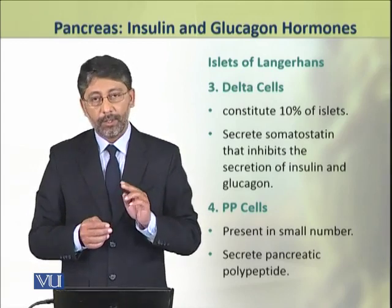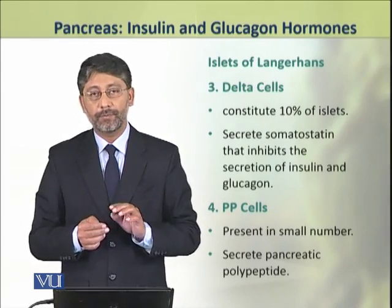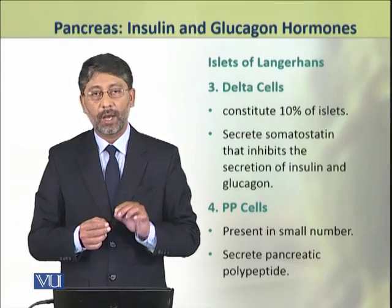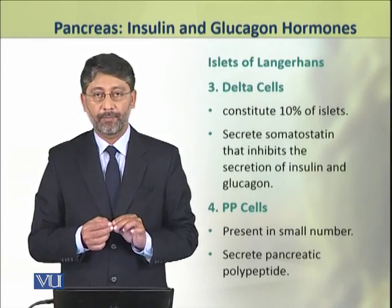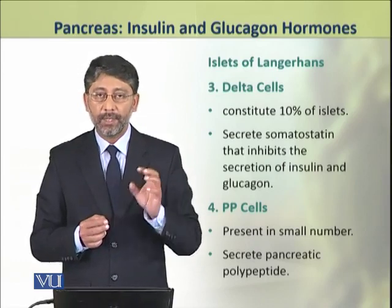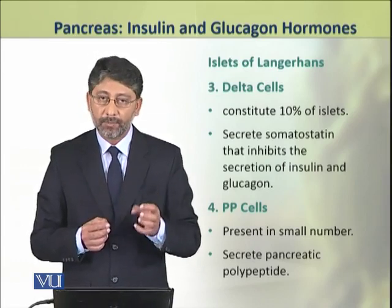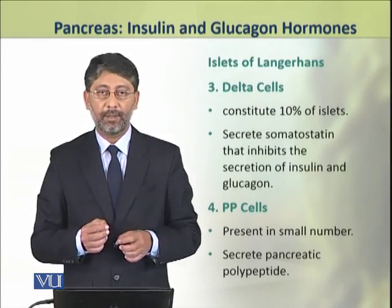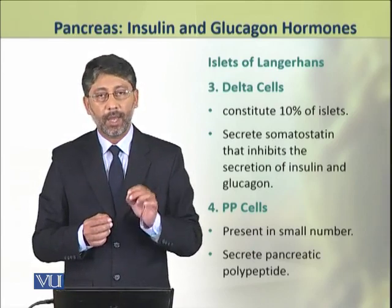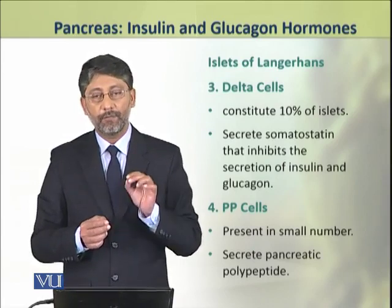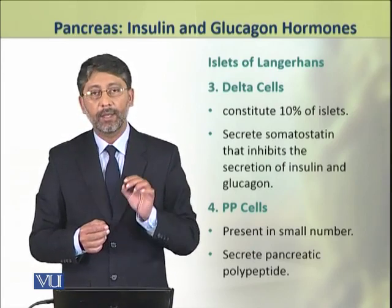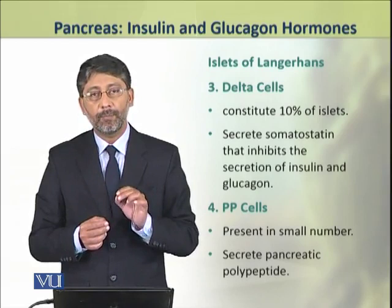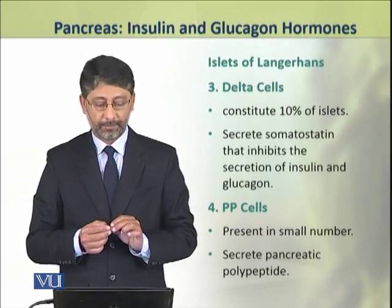The fourth type of cells are the PP cells. These are very small in number and they produce a hormone which is called pancreatic polypeptide.